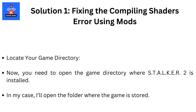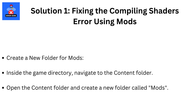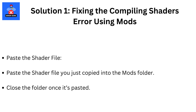Locate your game directory — you need to open the game directory where STALKER 2 is installed. Inside the game directory, navigate to the content folder. Open the content folder and create a new folder called 'mods'. Paste the shader file you just copied into the mods folder, then close the folder once it's pasted.